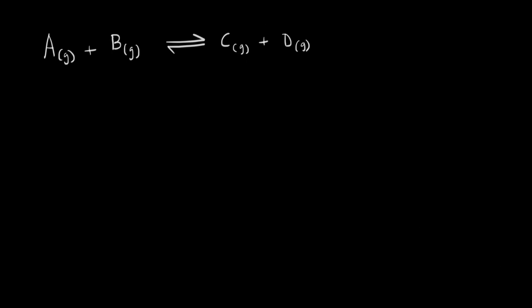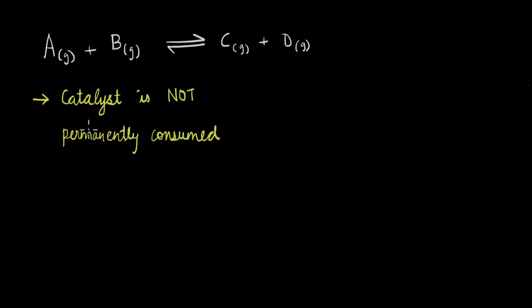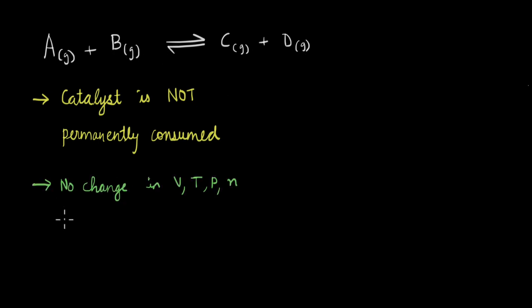First, we need to consider the role of the catalyst in the reaction. When we introduce a catalyst, it is important to note that a catalyst is not permanently consumed in the reaction. So if we add a small amount of catalyst at the start of the reaction, we will get the same amount at the end as well. Also, when we introduce a catalyst, there is no change in other factors like volume, temperature, pressure, or number of moles.